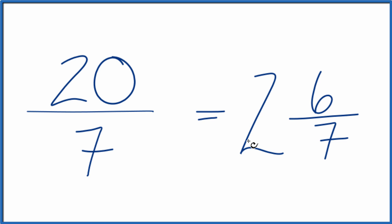And you can check that. 2 times 7 is 14, 14 plus 6, that's our 20, and we just kept the 7 the same.